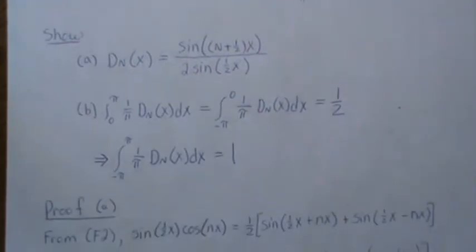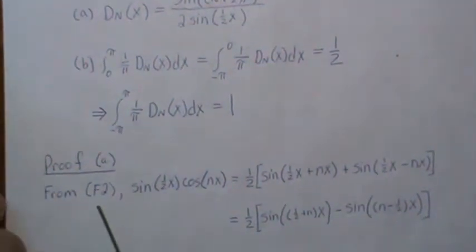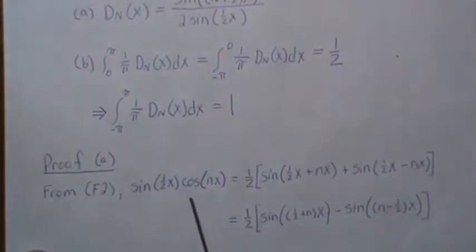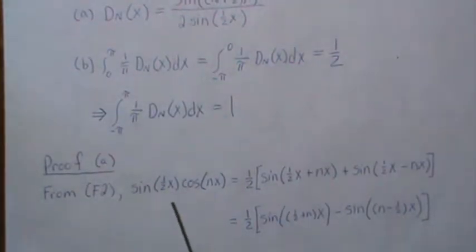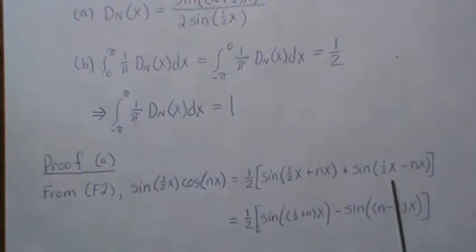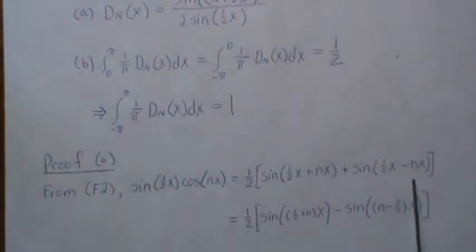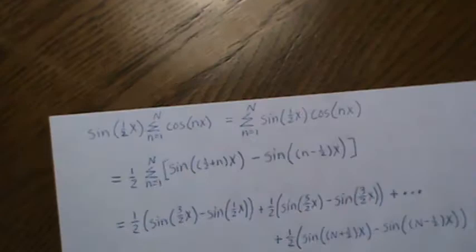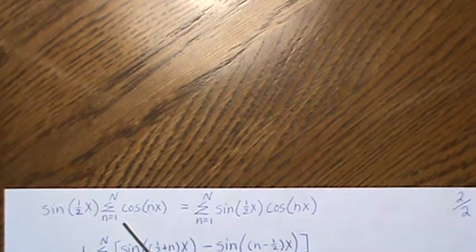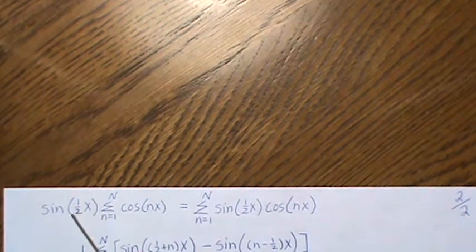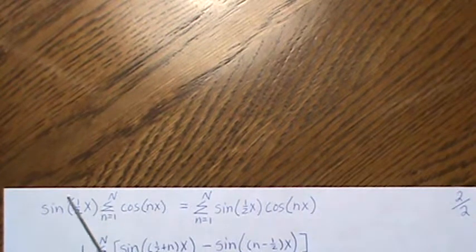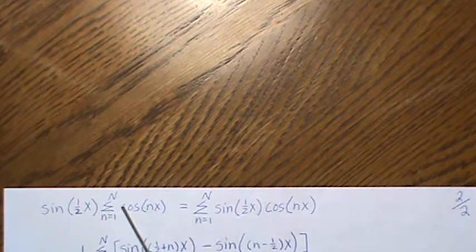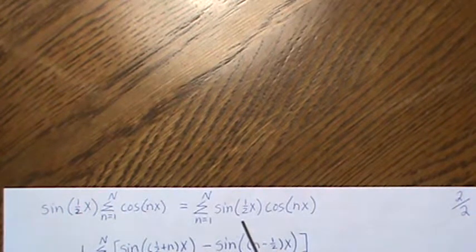The proof of part (a): From F2, we see this identity here. The product of sine and cosine is actually the sum of these sine angles, and then you can reduce it to this if you factor out x in each term. So we're going to use that in our proof. If we look at this sum, here's the sum of the cosines times sine of one-half x. Notice there's no little n index here, so we could take it in as a multiplication, and that's what we do here.